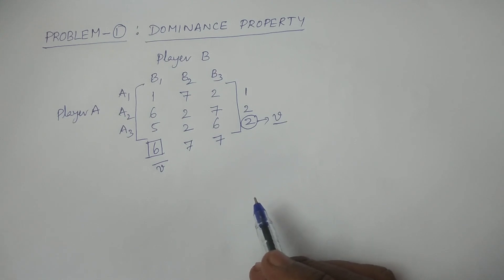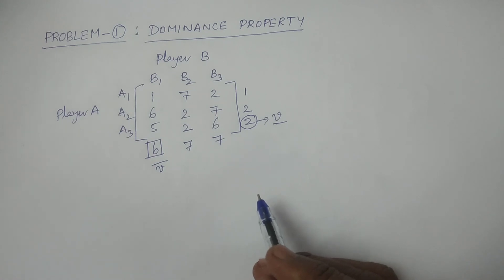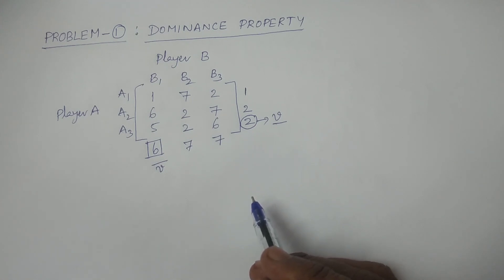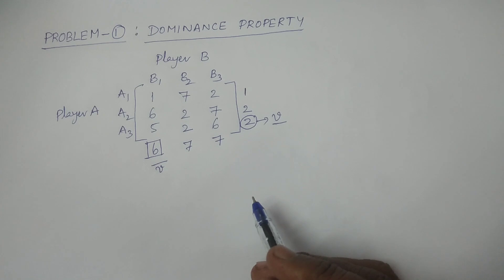What is meant by dominance property? It is very simple. If all the elements in one particular strategy of player A are greater than or equal to all the elements in another particular strategy, then obviously player A never chooses minimum gain. For player A, the greater values are to be kept and lesser values are to be deleted. Similarly, for player B, the lesser values are to be kept and greater values are to be deleted.